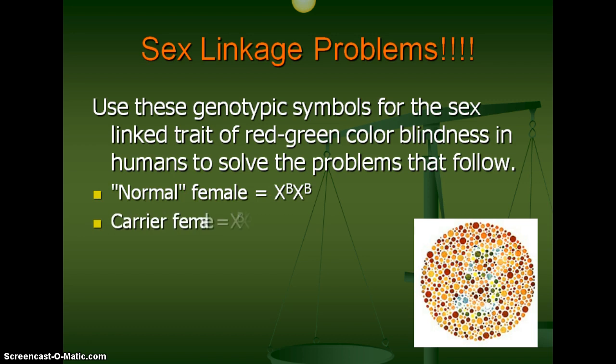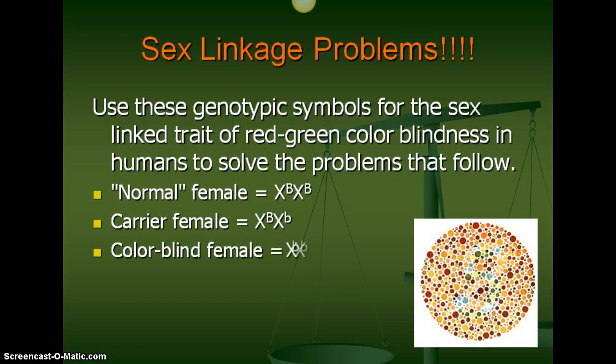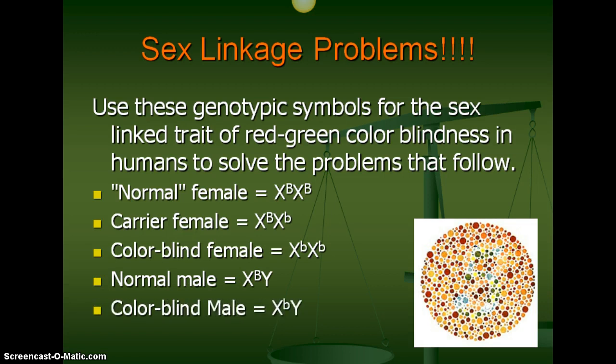A normal female is X big B, X big B. A carrier female is X big B, X little b. A color blind female is X little b, X little b. Those things are already on your notes packet; if you don't have your notes packet, you could write those in.